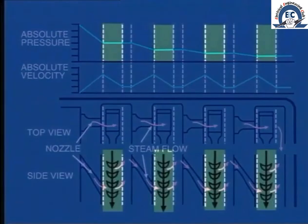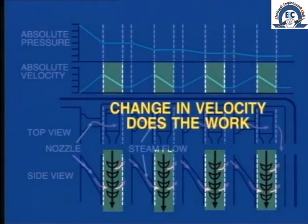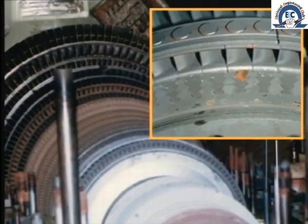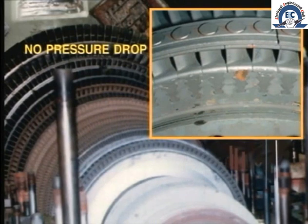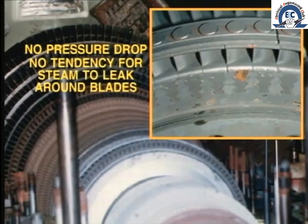But look at what happens here to the pressure as the steam passes through the moving blades. It does not decrease, neither does it increase. In fact, the pressure across the moving blades remains the same. It is the change in velocity which actually does the work and provides the energy to drive the turbine. This feature of impulse blading — that is, constant pressure across the moving stage — brings about a certain constructional advantage. As there is no pressure drop, there is no tendency for steam to leak around the outside circumference of the blades. Because of this feature, we will inevitably find that impulse blading is used in the high-pressure stages of the turbine.